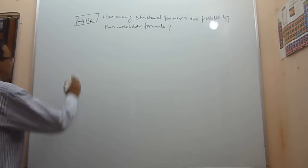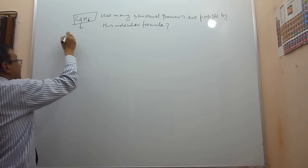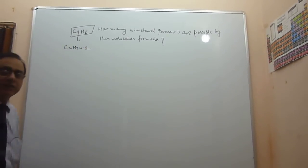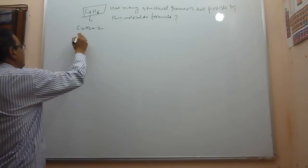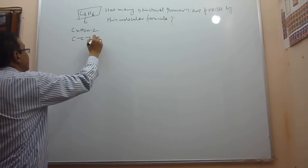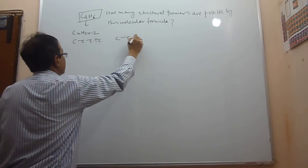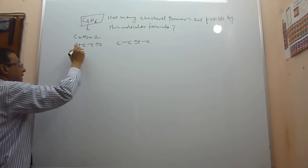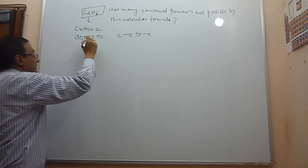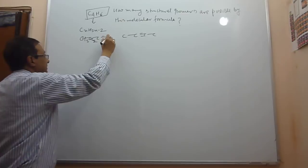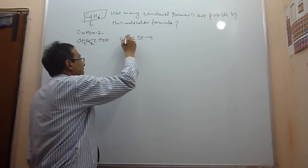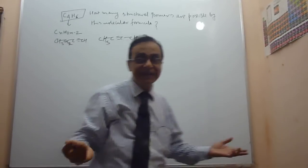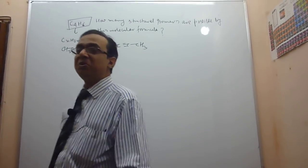Many students think that this is the general formula CnH(2n-2), and therefore there are only two isomers — that is 1-butyne and 2-butyne. Is it correct? No.